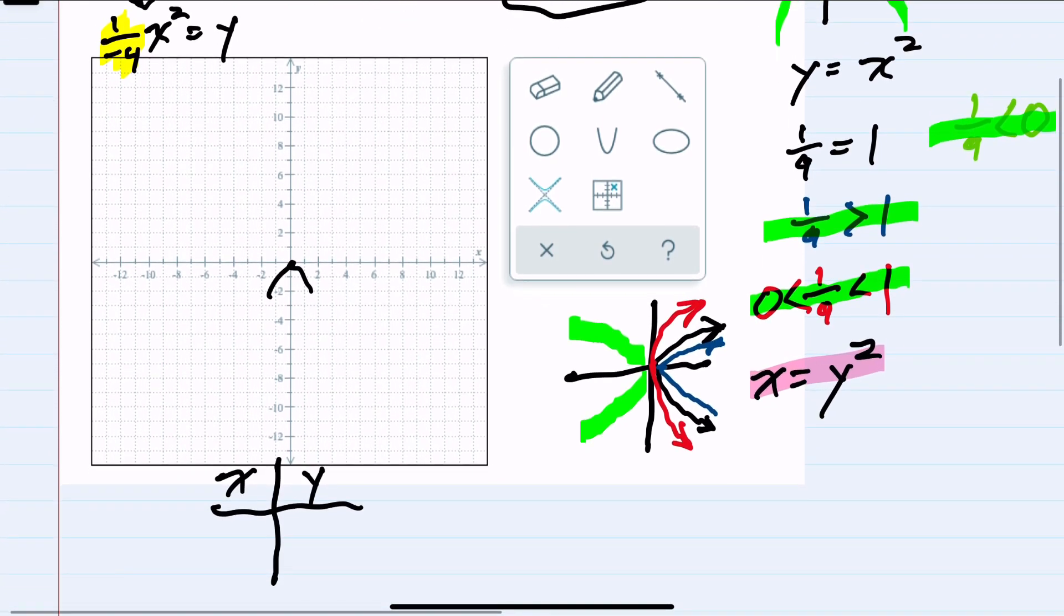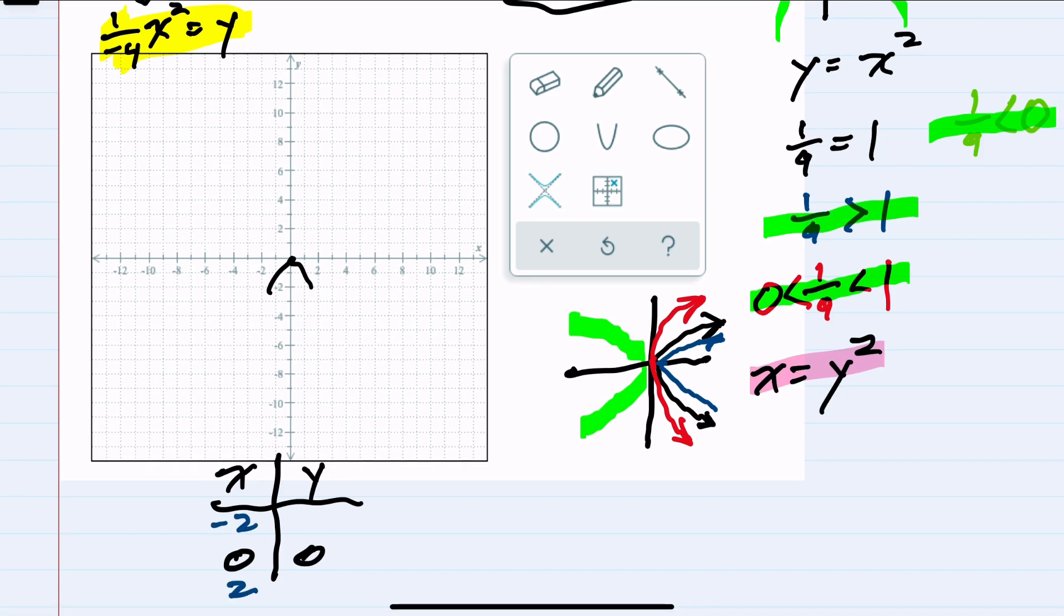We already have our vertex at 0, 0. Since my expression is solved for y, I'm going to choose a couple of other x values to the left and right of x equals 0. So I'm going to choose negative 2 and positive 2.